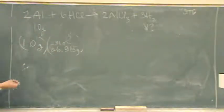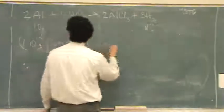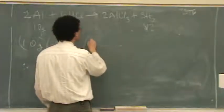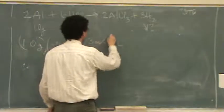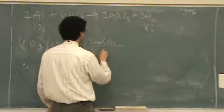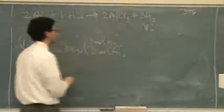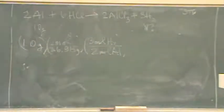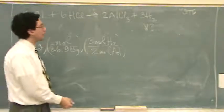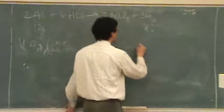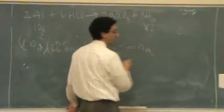You always want to go to moles, then do your molar ratio. Nicely, this was balanced for us, otherwise we would balance it. Three moles H2 for every two moles of aluminum. So now I went from moles of aluminum to moles of H2. So this is moles of H2, that can be calculated.